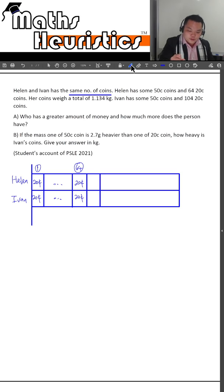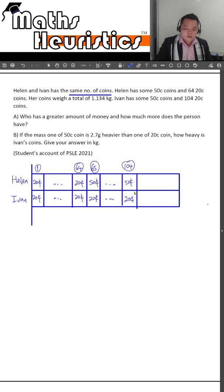From the 65th coin onwards, Helen will lay out the 50 cent coins in a row like this. But Ivan will continue to lay his 20 cent coins all the way until he has laid out his 104 twenty cent coins. Then from here on, with this remaining portion, they will continue to lay the 50 cent coins.